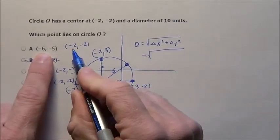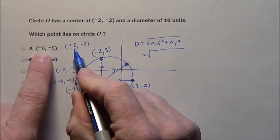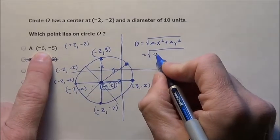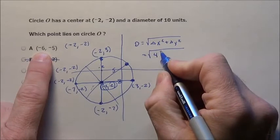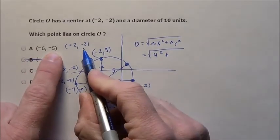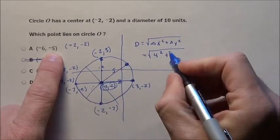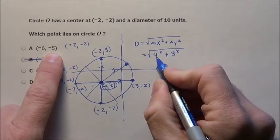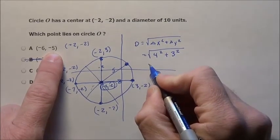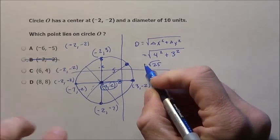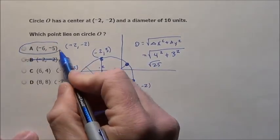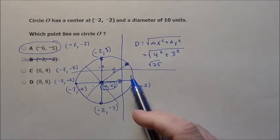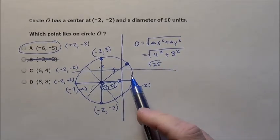Let's see what we get with this one. The difference of negative 6 and negative 2 is 4. So that's going to be 4 squared plus the difference of negative 5 and negative 2 is 3 squared. Look what happens. 16 and 9, square root of 25. That's going to be it right there. That guy is going to be our option.